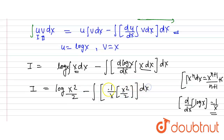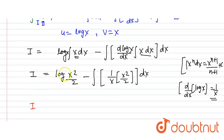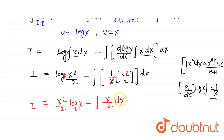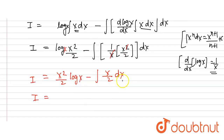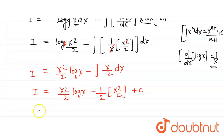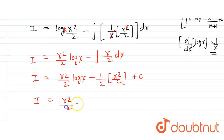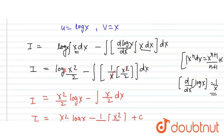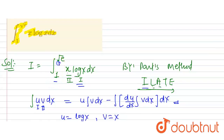Simplifying: I = (x²/2)·log(x) − ∫(x/2) dx. One term cancels out. After integrating x/2, taking 1/2 outside the integral: I = (x²/2)·log(x) − (1/2)·(x²/2) + C. So finally I = x²/2·log(x) − x²/4 + C.